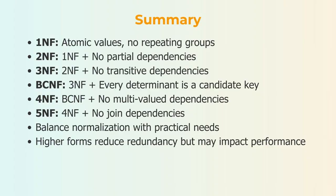To wrap up, we covered all the normal forms from 1NF to 5NF. Each form builds on the previous one and helps us organize data better. 1NF ensures each value is simple and there are no repeating groups. 2NF removes partial dependencies. 3NF eliminates transitive dependencies. BCNF makes sure every determinant is a superkey. 4NF deals with multi-valued dependencies. And 5NF takes care of join dependencies.